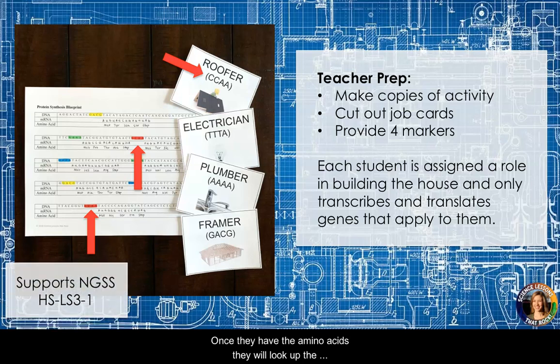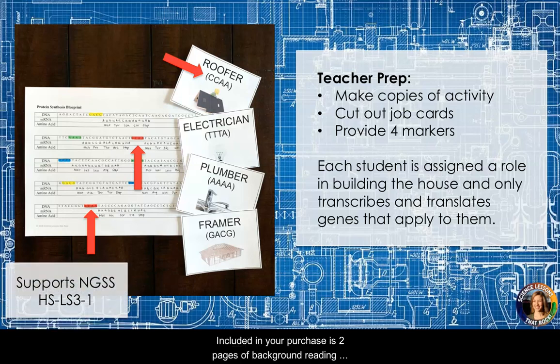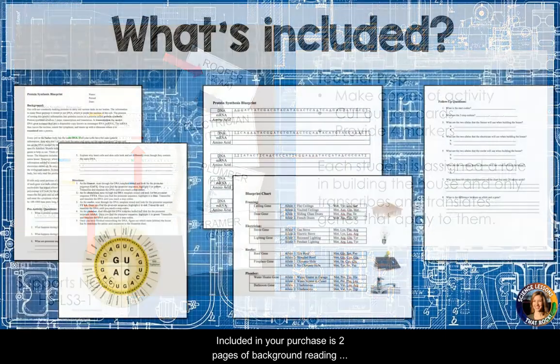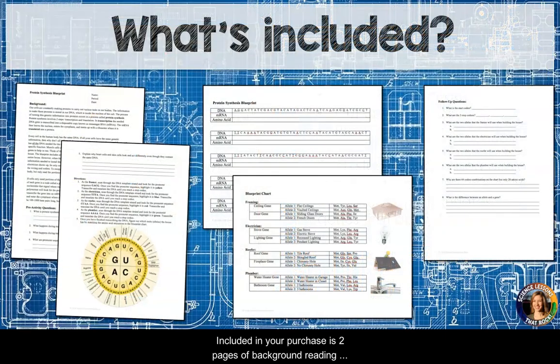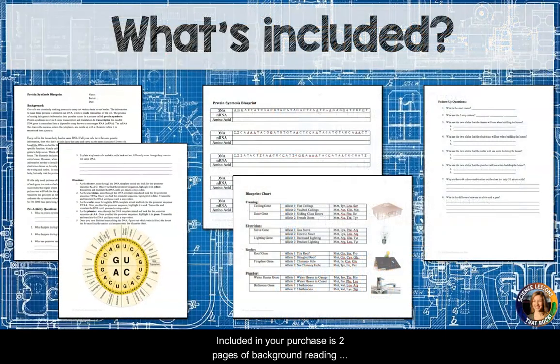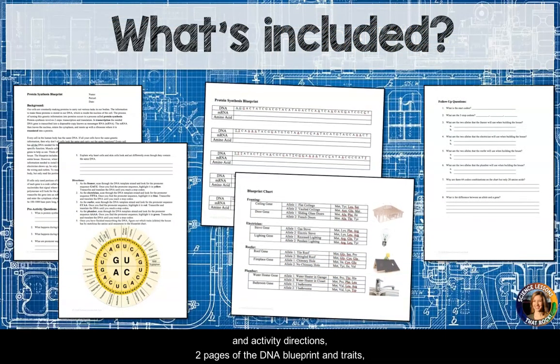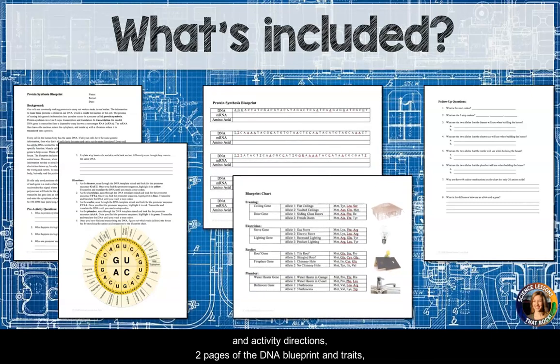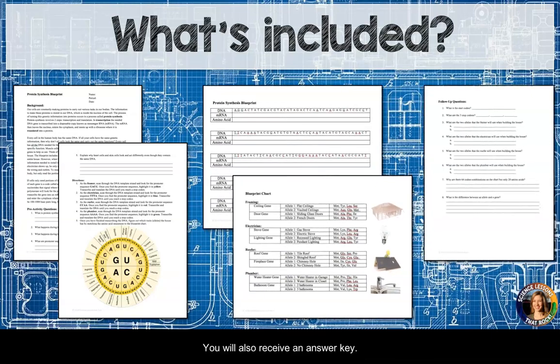Once they have the amino acids, they will look up the associated trait the house will have. Included in your purchase is two pages of background reading and activity directions, two pages of the DNA blueprint and traits, and one page of follow-up questions.